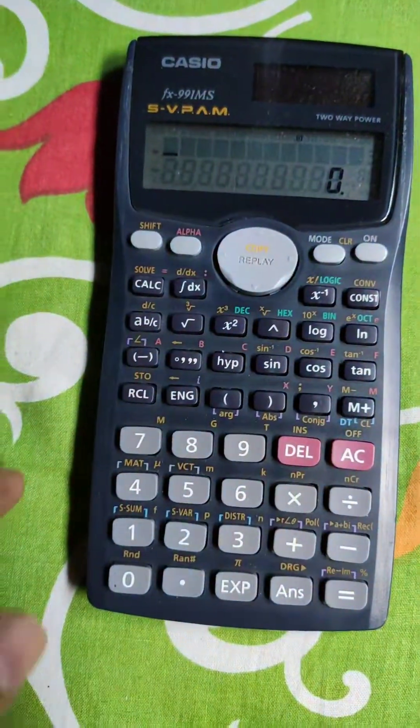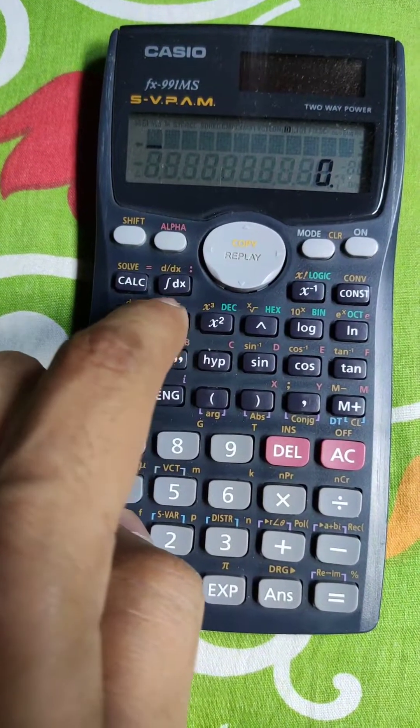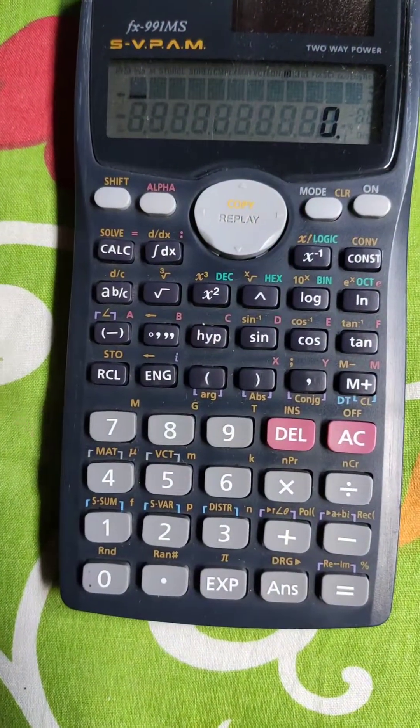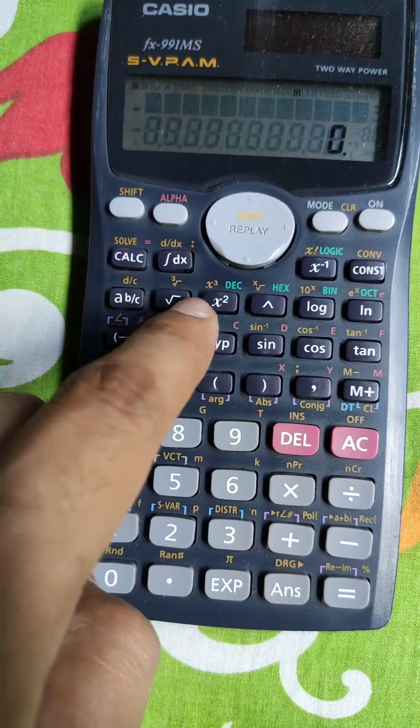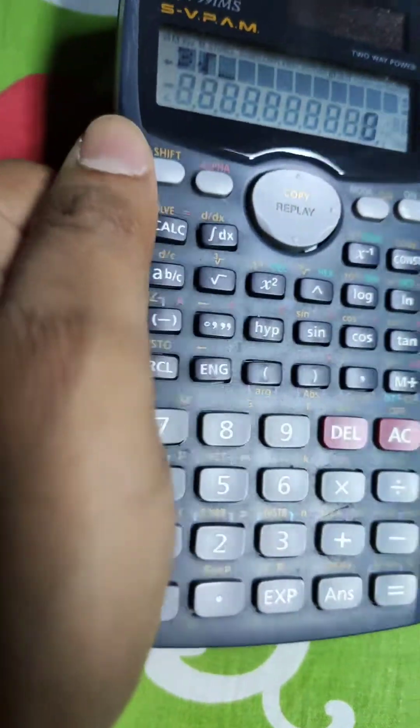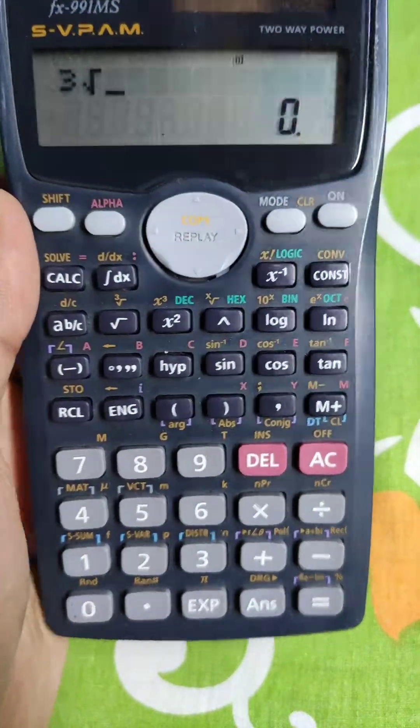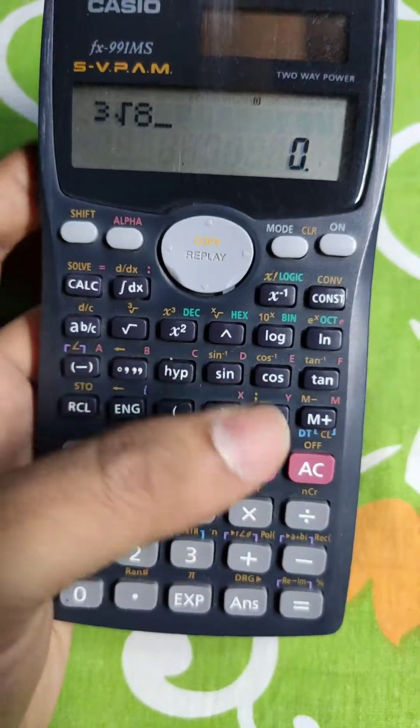For cube root, we use this operator. How do we access? That's the whole trick. Use the shift button, press this button. Now we are accessing the cube root. Cube root of, say, 8. It should be equal to 2.